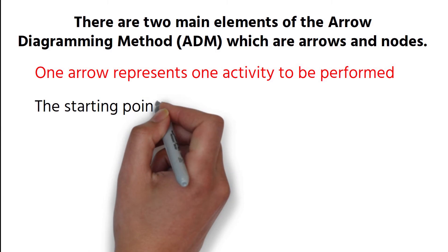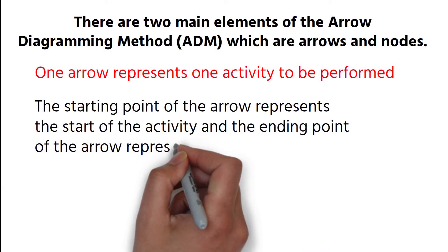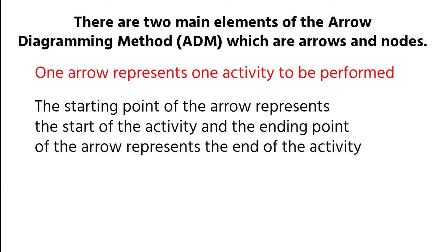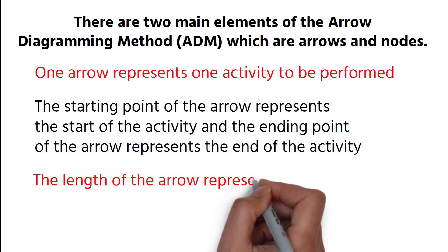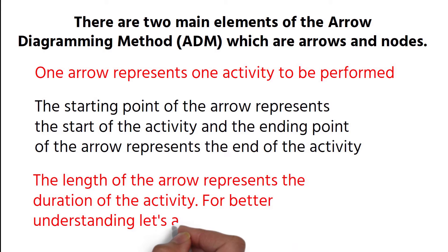The starting point of the arrow represents the start of the activity and the ending point of the arrow represents the end of the activity. The length of the arrow represents the duration of the activity. For better understanding, let's analyze the schema.